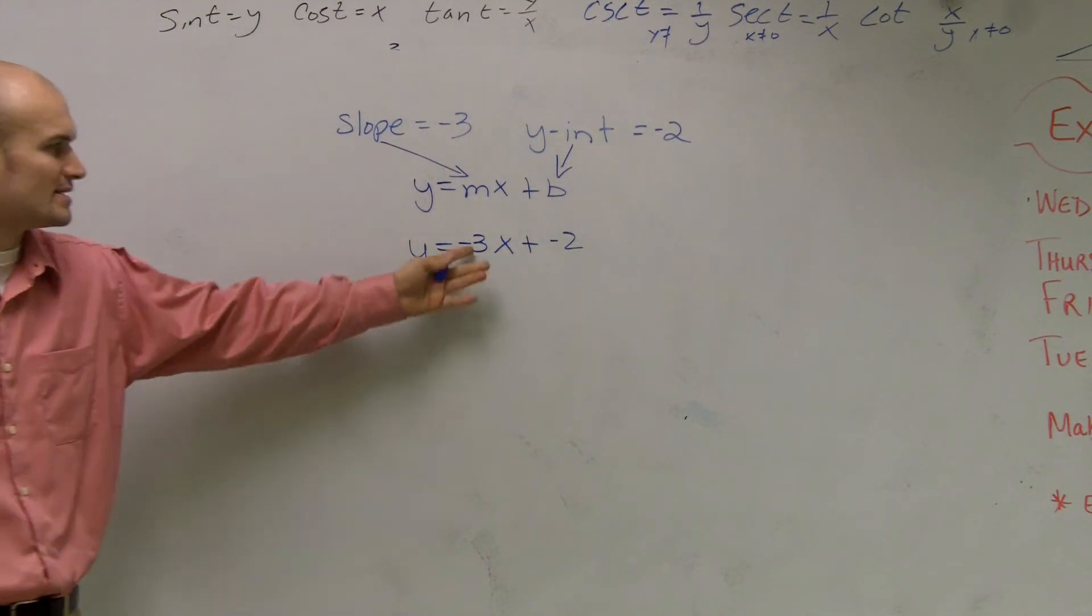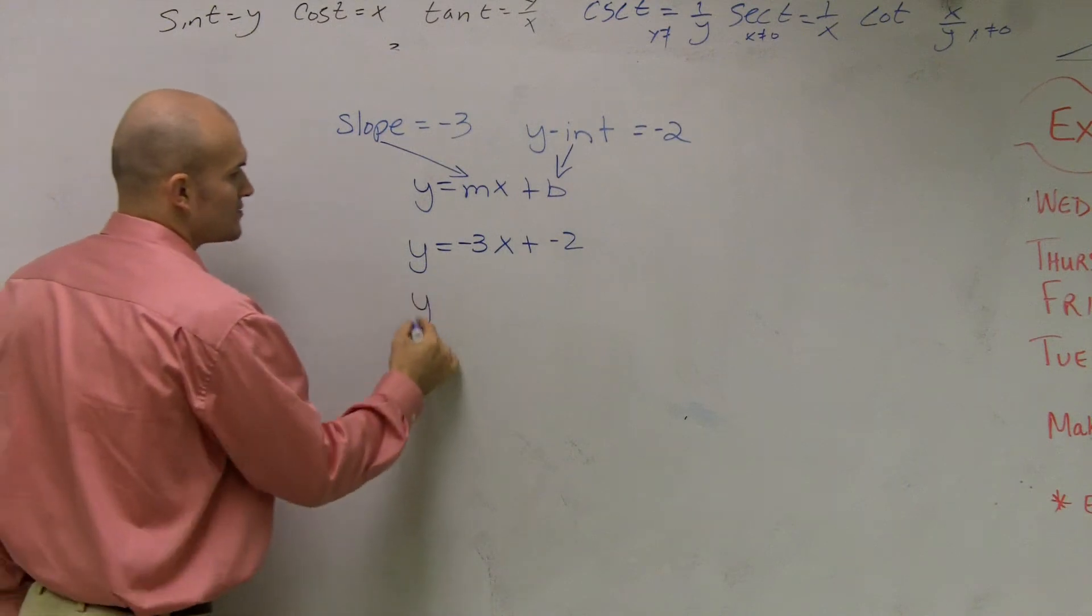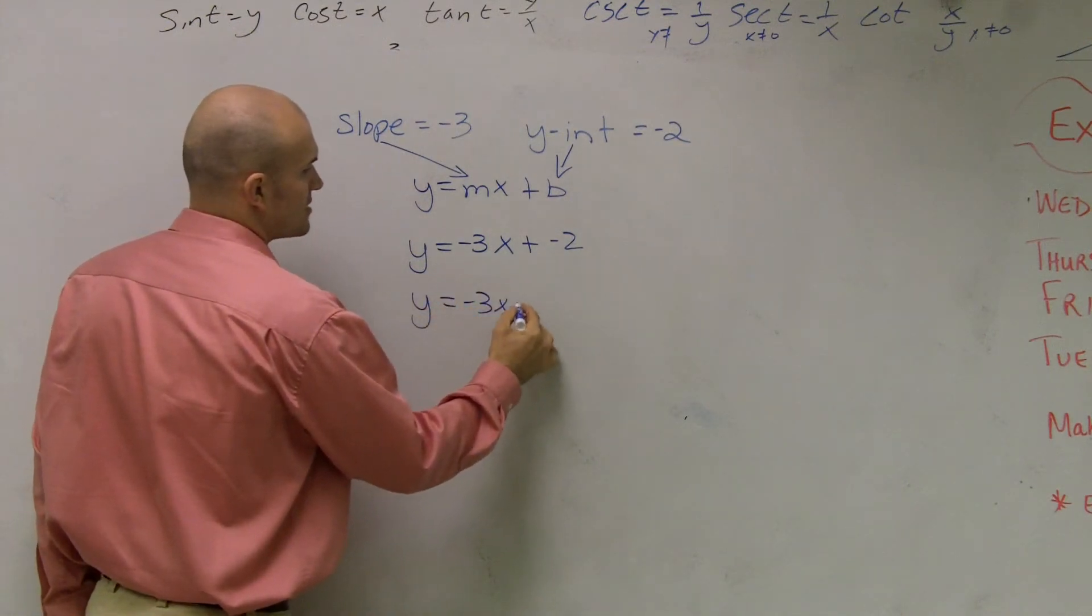Now obviously, we can simplify this even more. Just write it as y equals negative 3x minus 2.